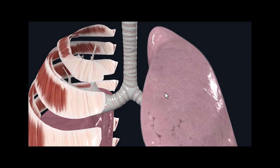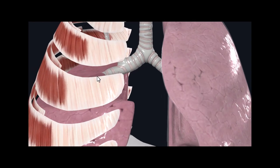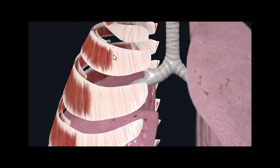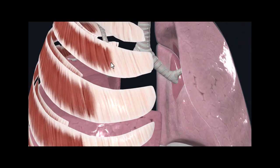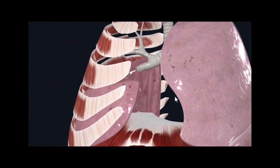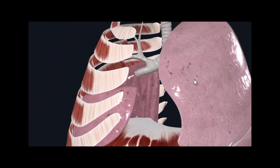The parietal fluid, along with the intercostal muscles — these muscles right here — and the diaphragm, actually help facilitate ventilation or breathing.